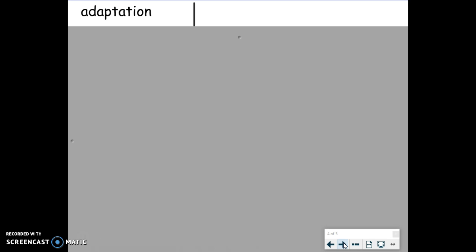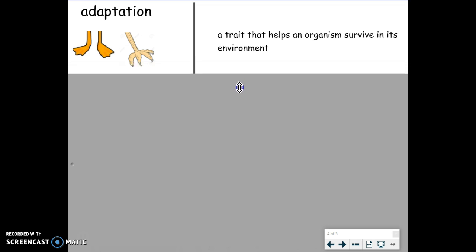The next card is Adaptation. This should be card number six. A trait that helps an organism survive in its environment. Different animals have different adaptations based on where they live. In the picture, two different types of bird's feet show that different traits help different organisms survive.